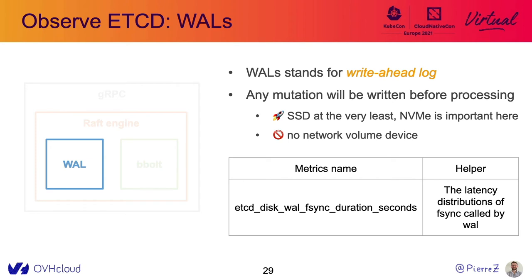Now let's talk about storage, starting with the write-ahead log. One thing you need to know is that every mutation, every proposal, will be written to disk, which means etcd will wait to have fully written any mutation to disk. That is why you need to use fast disk — SSD is the very least you must use, and NVMe is really important. Please don't use any network volume device because you will have poor performance. To check how well you are doing, there is this metric which gives you the latency distribution of fsync, which is the action of syncing what you wrote to the WAL.